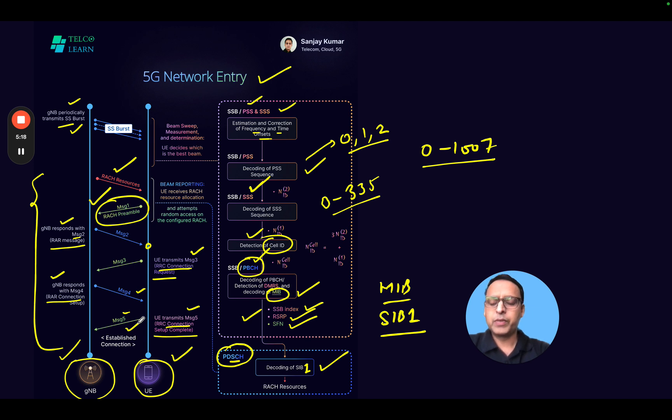However, there can be scenarios where you are doing procedures like handover, and we do a random access procedure which is more of a contention-free random access. In addition, there are some other random access procedures which are defined, called two-step RACH.